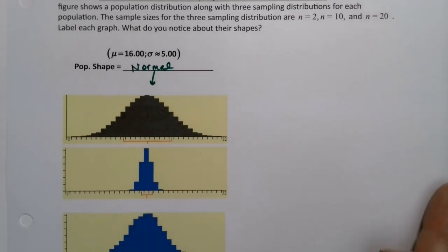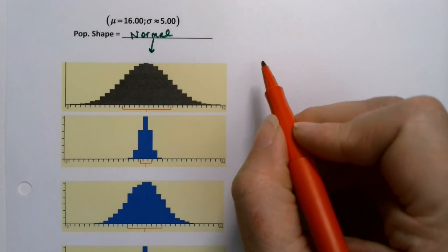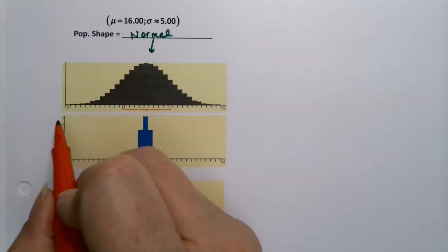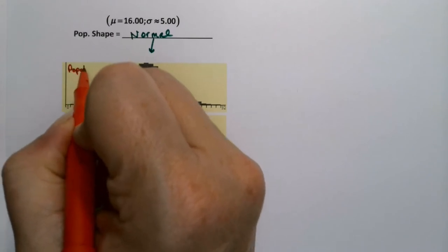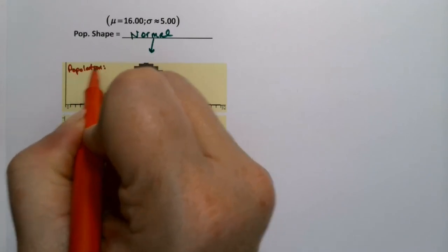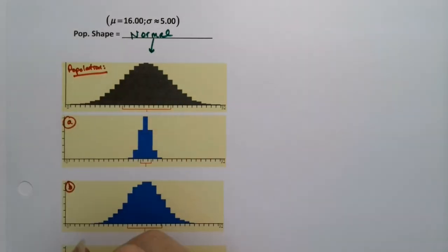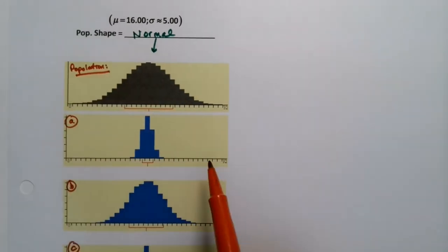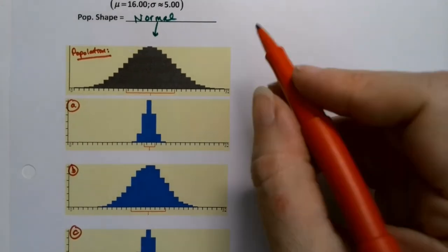So one thing we learned is that the spread shrinks, right? So we know that the spread... I want to think about it this way. Let me label these. If I say this is the population up here, which it is, one of these has to be a graph with n equals 10, one has to be n equals 20, and one has to be n equals 2.